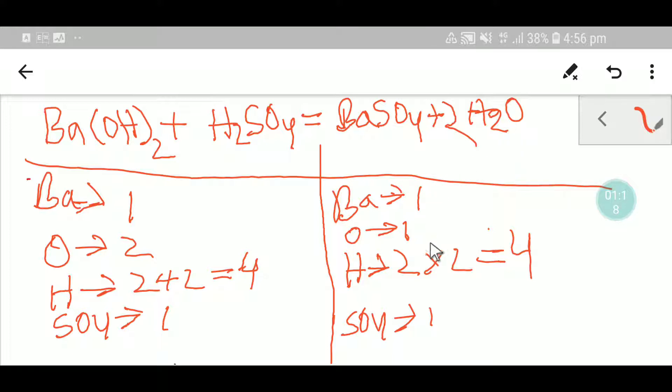Now your sulfate is balanced, your hydrogen is balanced, your oxygen is balanced, and your barium is balanced. So this reaction is a balanced equation. Now let me show you the second way to balance this reaction that you can perform in your exam hall quickly.